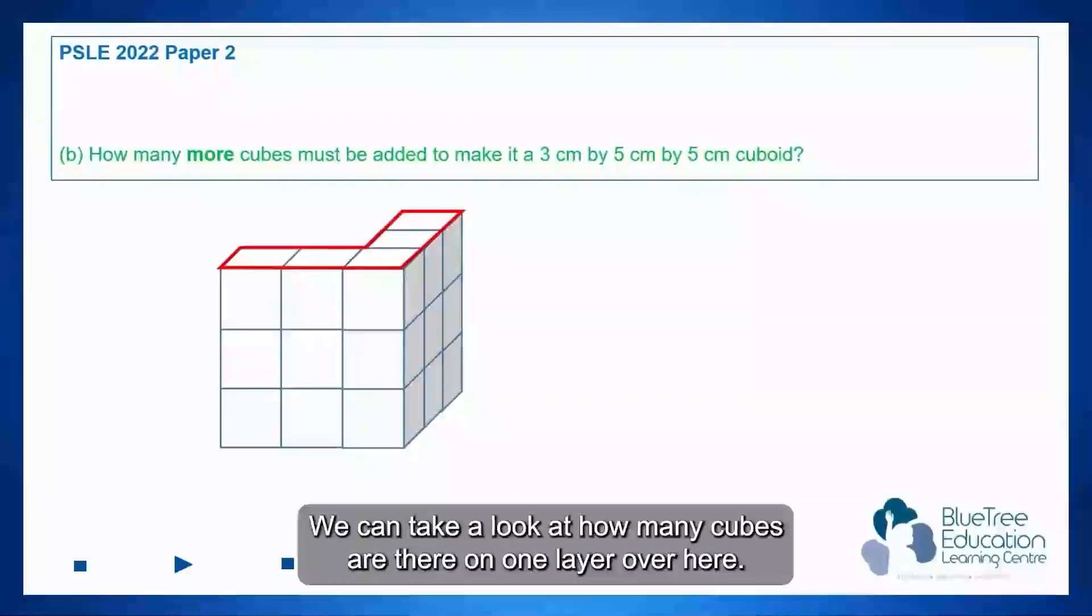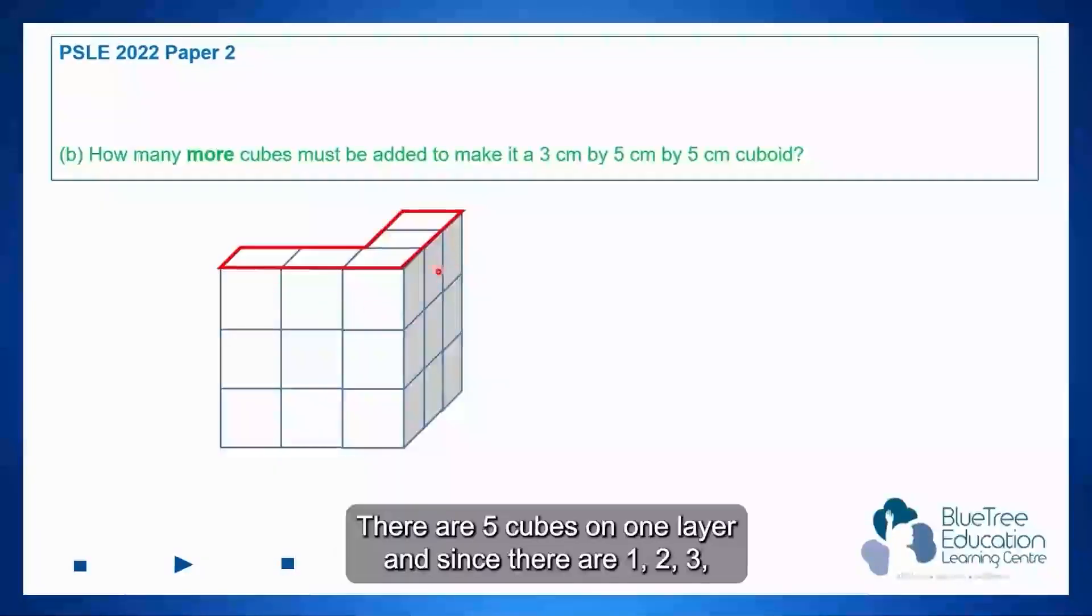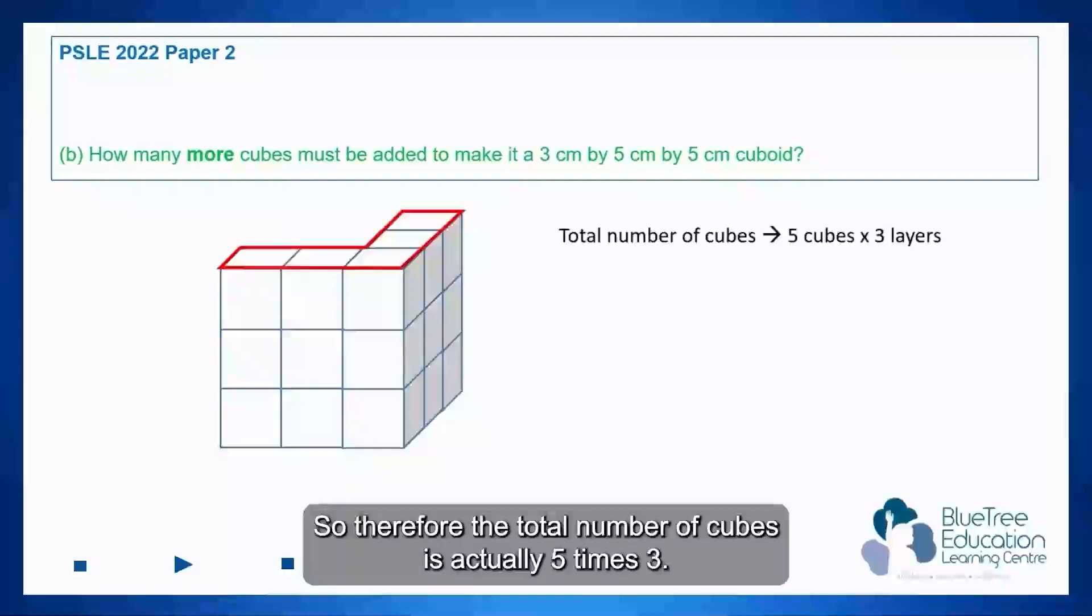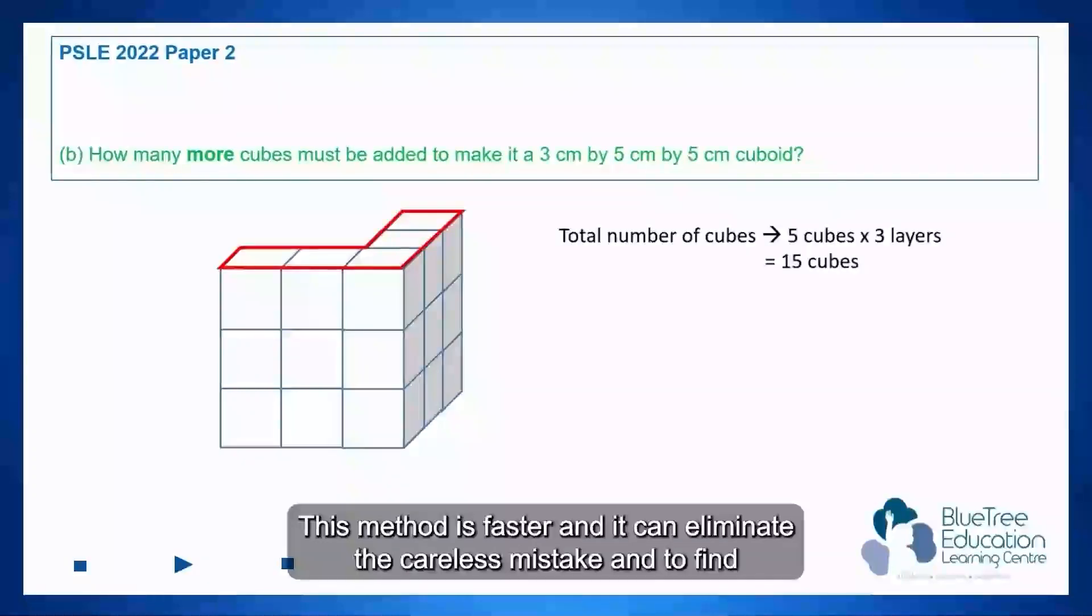We can take a look at how many cubes are there on one layer over here. So take note that's one, two, three, four, five. There are five cubes on one layer. And since there are one, two, three, there are three layers stacked on top of each other like a HDB block. So therefore the total number of cubes is actually 5 times 3. There are 15 cubes over here. This method is faster and it can eliminate careless mistakes.